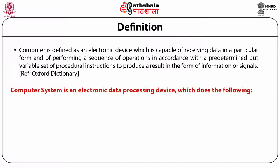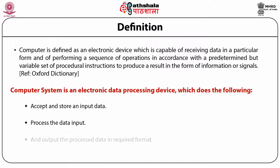A computer system is an electronic data processing device which accepts and stores input data, processes the data input, and outputs the product.